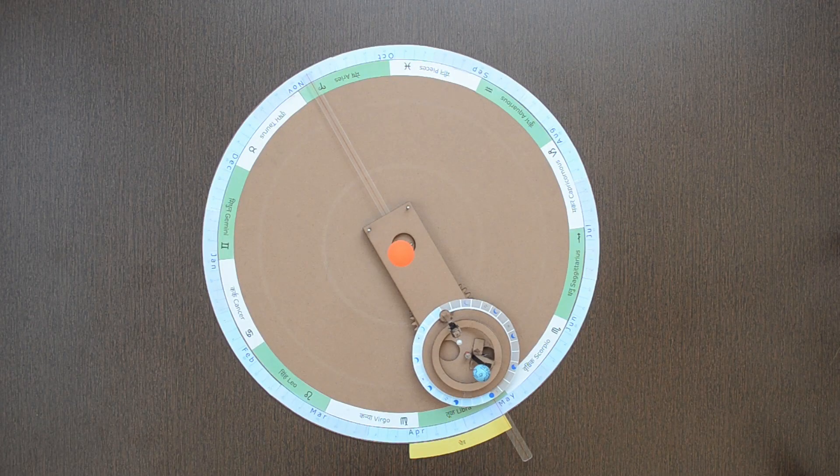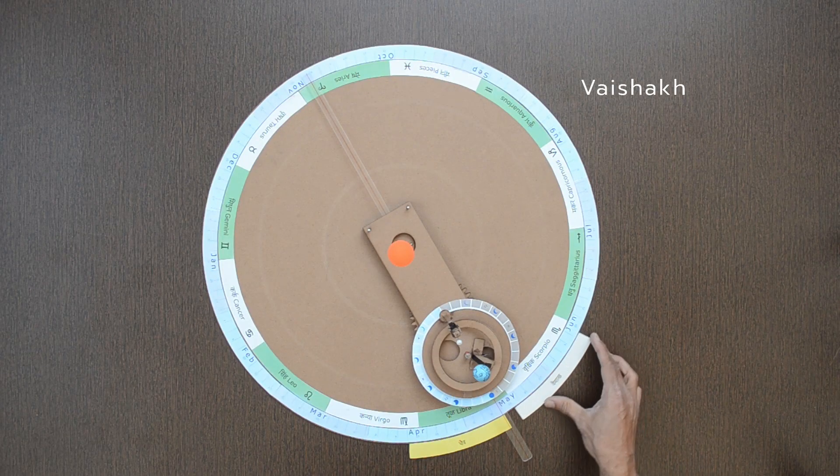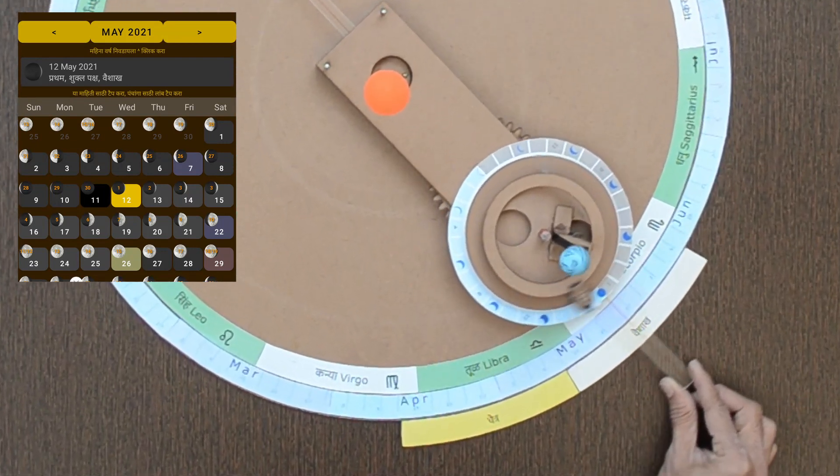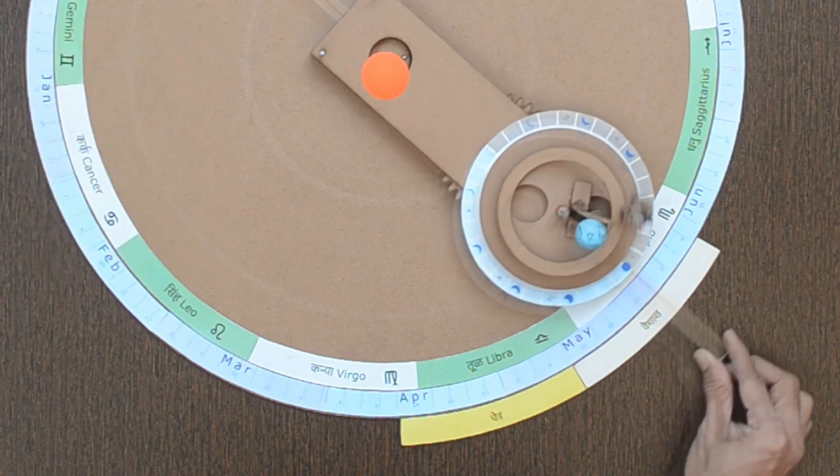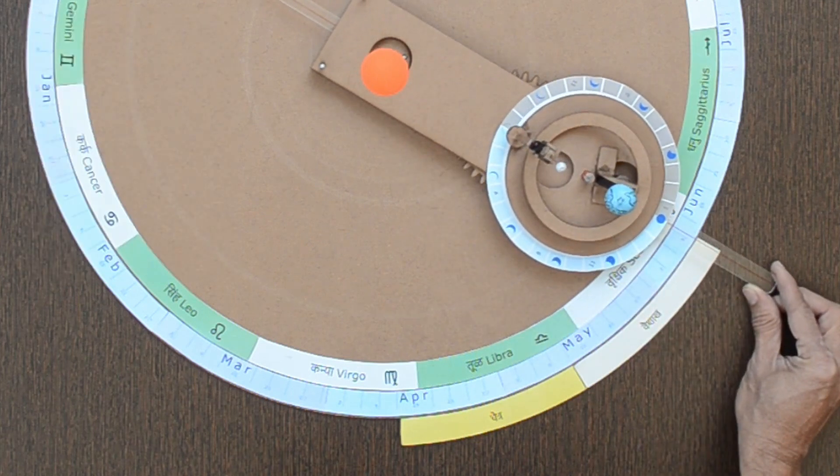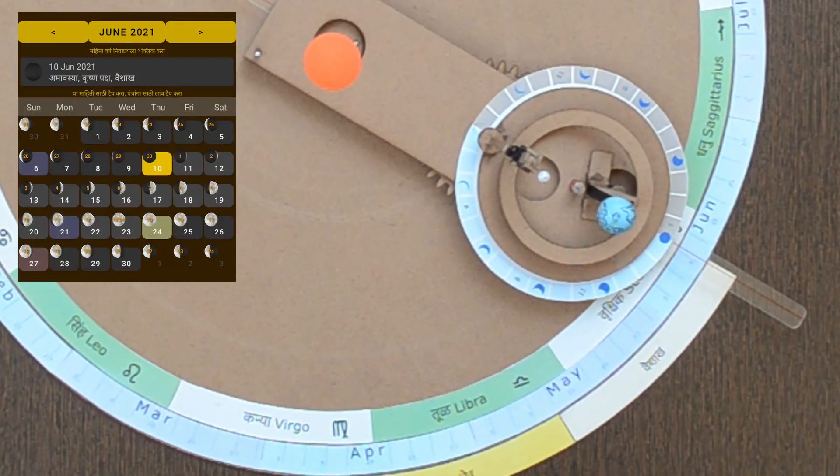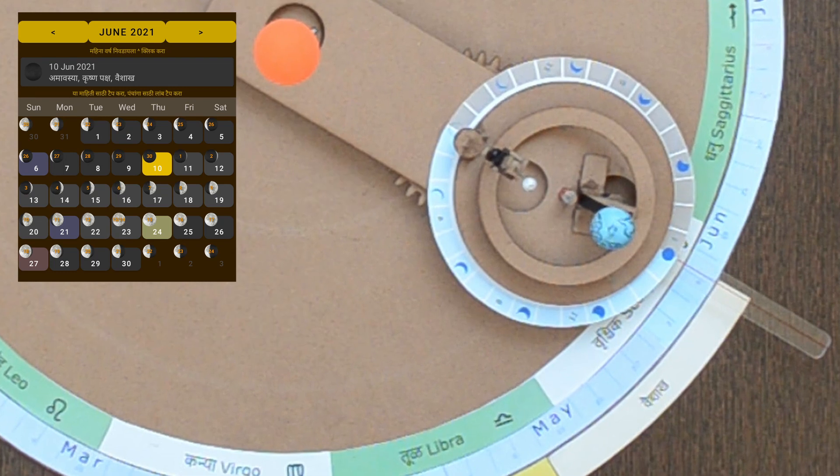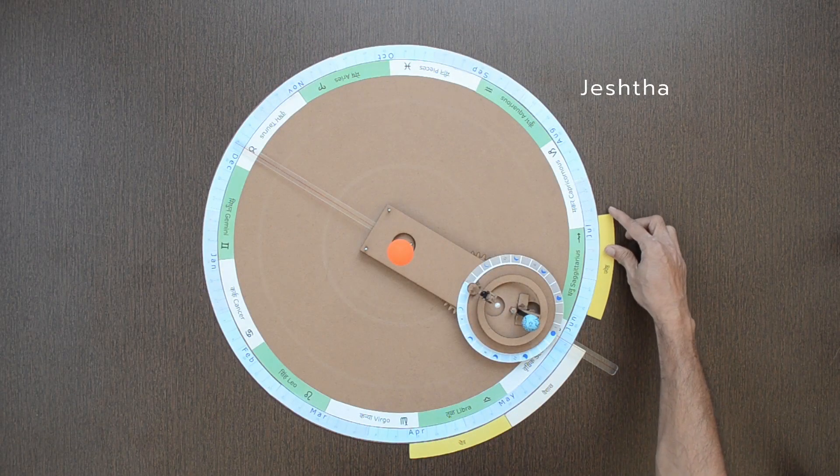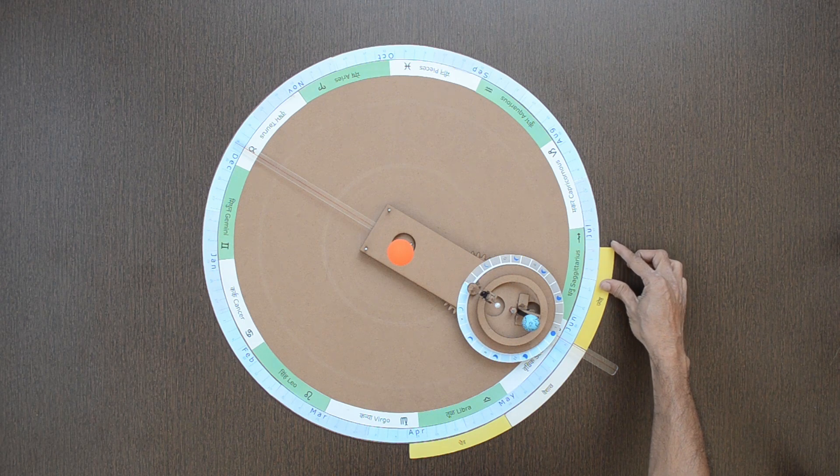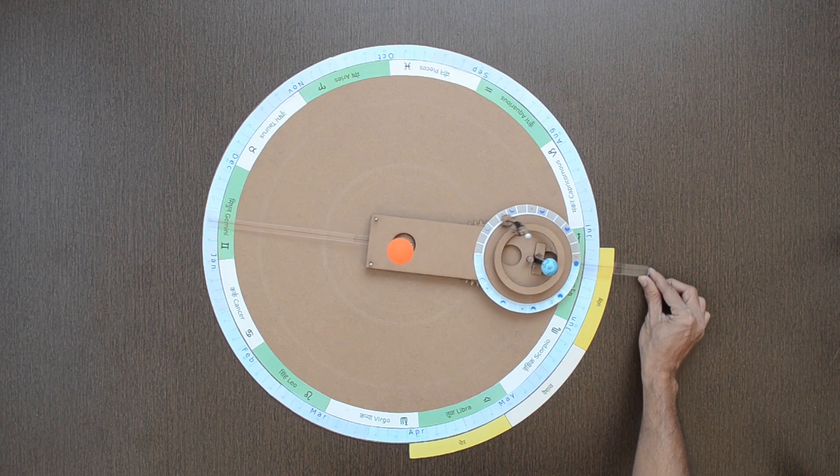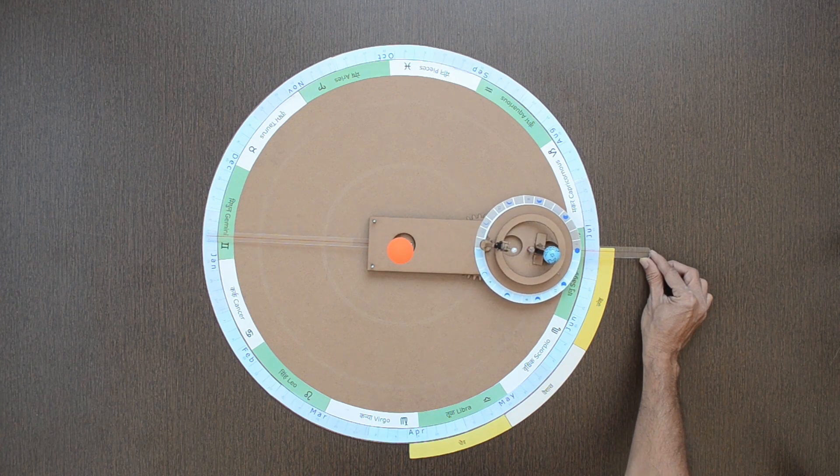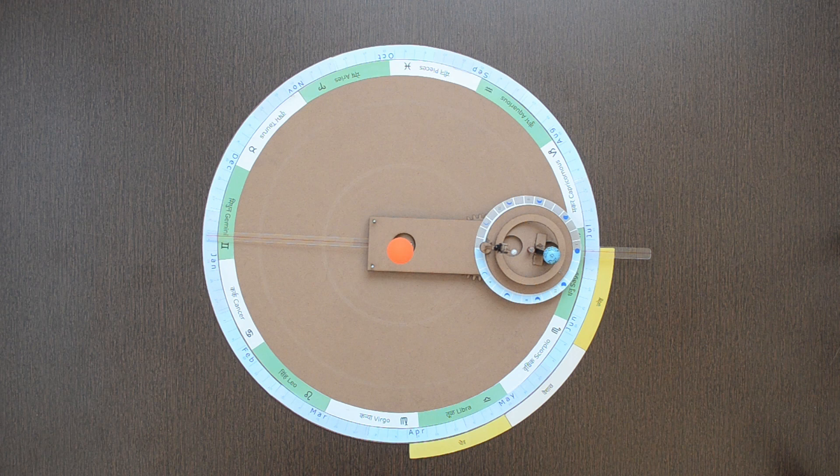Let's move ahead. Next month Vaishak starts from 12th May. 26th May is a full moon or Purnima day. 10th June is a new moon day or Amavasya, the start of another month, Jeshta. In every month, sun transits from one Rashi to another.